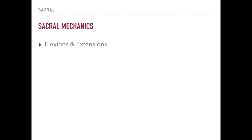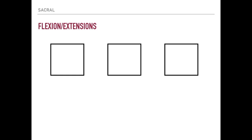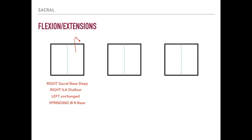Now we're going to talk about something different: flexions and extensions, which are different types of sacral somatic dysfunctions. You can have a unilateral flexion where one side of the sacrum flexes and the other side doesn't move at all. Just like with torsions, you need to ask what's happening to your landmarks — how is the sacral sulcus moving, how is the ILA moving. For a right-sided sacral flexion: the right sacral sulcus will be deep because the right side is flexing; the right ILA will be shallow because the top is flexing and the bottom becomes more shallow; the left side is unchanged; and because the right base moved anteriorly, springing will be positive over the right base.